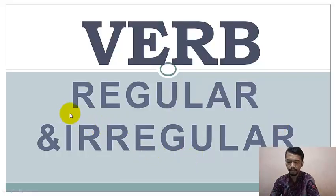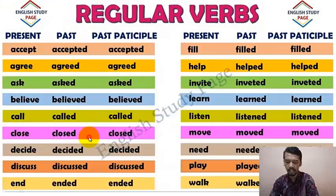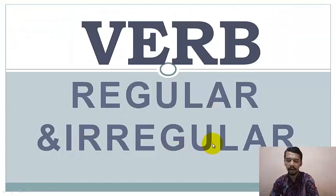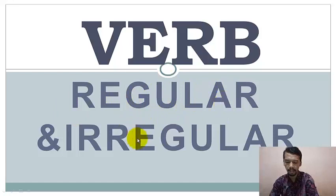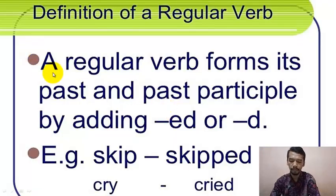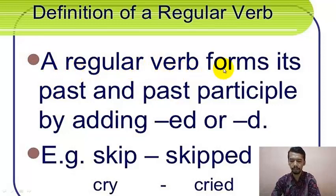The second topic we want to talk about is regular and irregular verbs. We discuss this together because it has a correlation with simple past — specifically, how to change the verb to become a past verb. That is connected to whether a verb is regular or irregular. The first one is regular verbs.